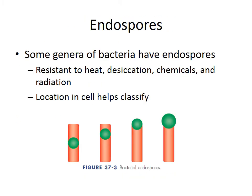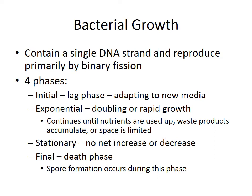Some genera of bacteria have endospores. Endospores are structures that are resistant to heat, desiccation, chemicals, and radiation. They can be found at different places in the cell, and they help bacteria survive conditions that would otherwise probably kill them.